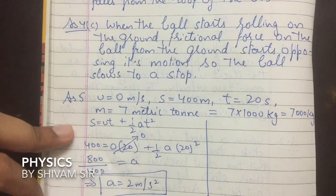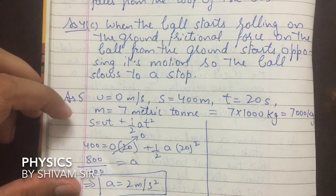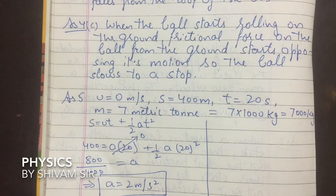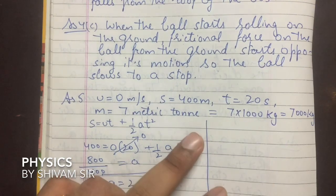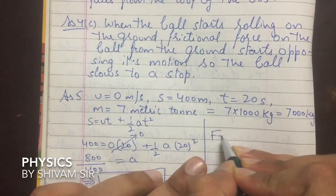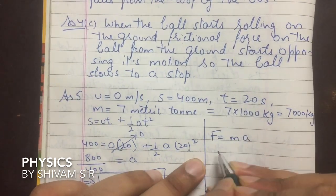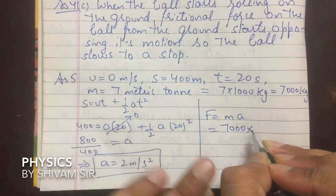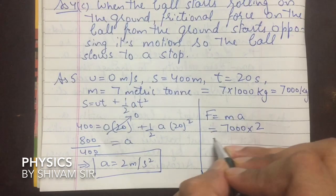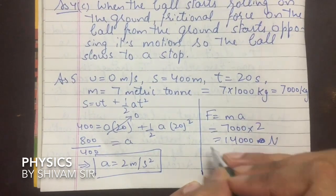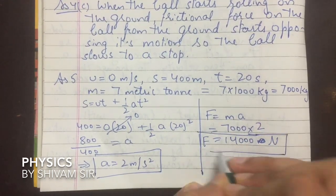Next part: Find the force acting on the truck if the mass is 7 metric tons. One metric ton = 1000 kg, so 7 metric tons = 7000 kg. Using F = ma: F = 7000 × 2 = 14000 N. Force is equal to 14000 newton.